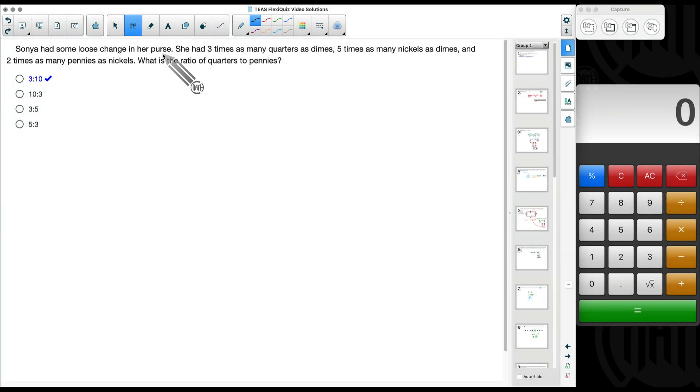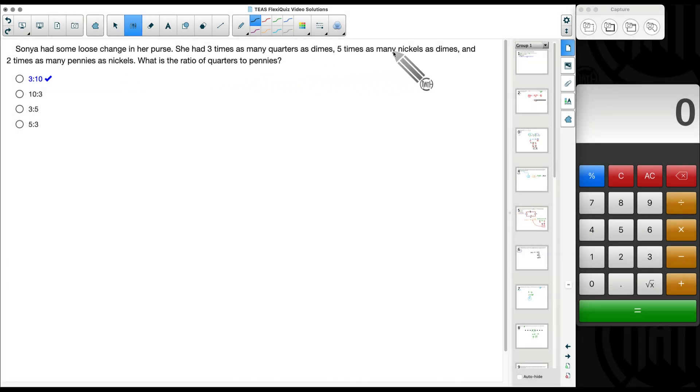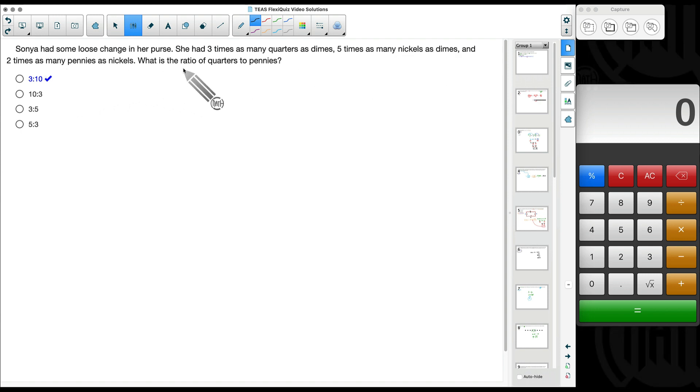Sonya had some loose change in her purse. She had three times as many quarters as dimes, five times as many nickels as dimes, and two times as many pennies as nickels. What is the ratio of quarters to pennies?